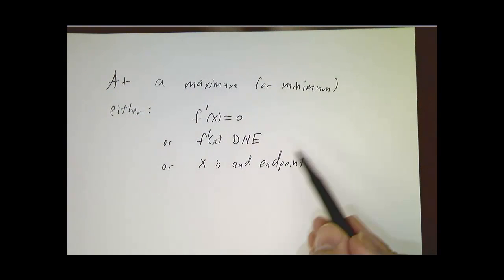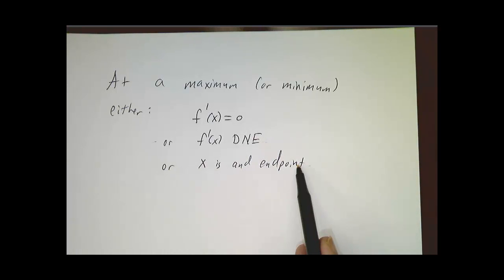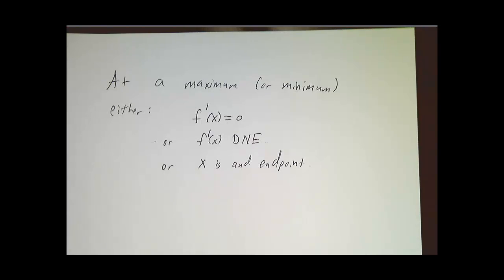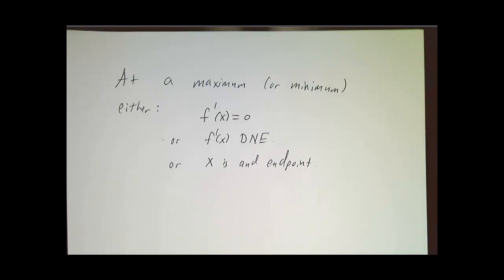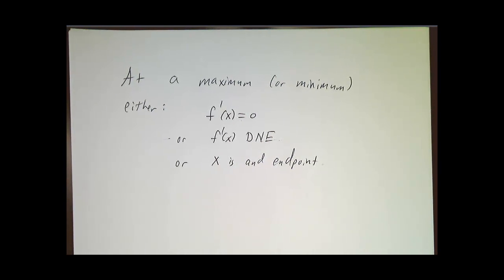Usually we're not interested in places where it doesn't exist, and usually we're not interested in end points. Usually, the way to find a maximum is to take a derivative and set it equal to 0. In fact, this is where the name calculus came from. Leibniz wrote a paper talking about this great new method for finding areas and slopes and various other things, and the method is the calculus for doing this.